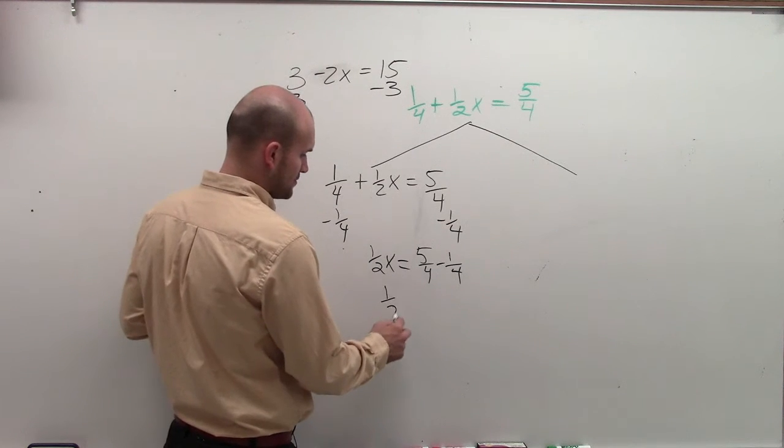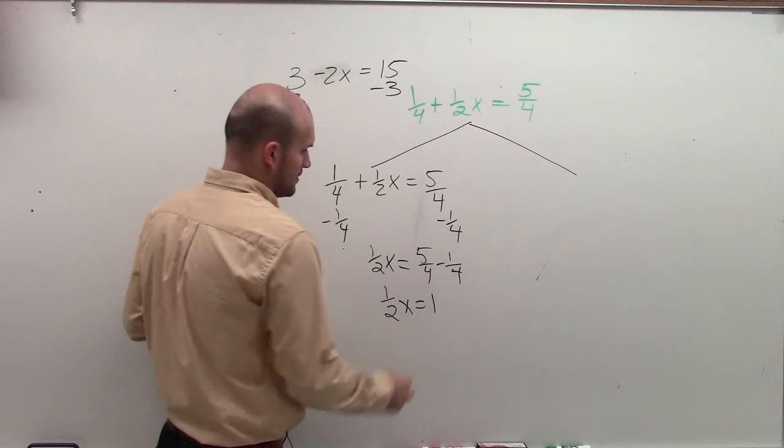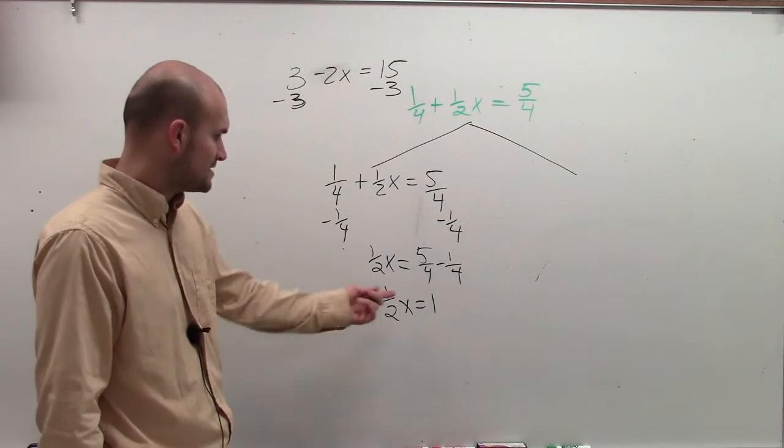So 5/4 minus 1/4 is? 4/4. 4/4 is equal to? 1. Good. So now we have 1/2 x equals 1.